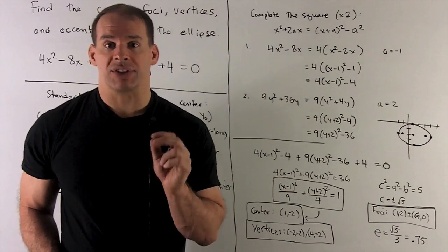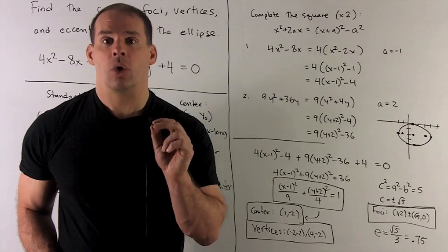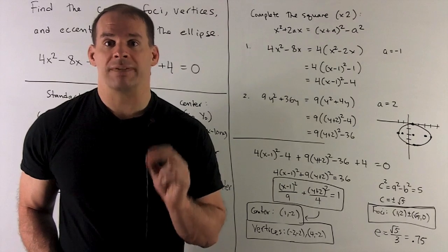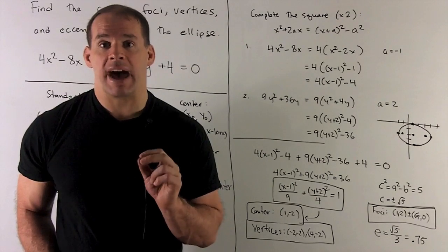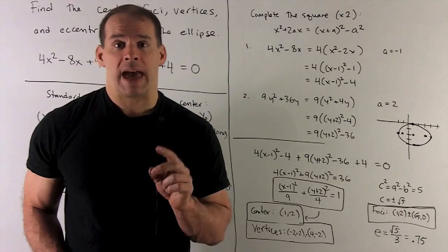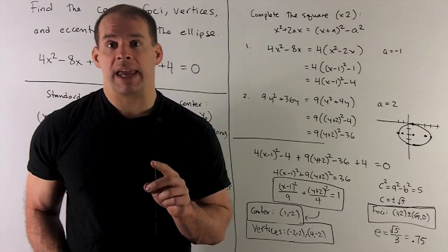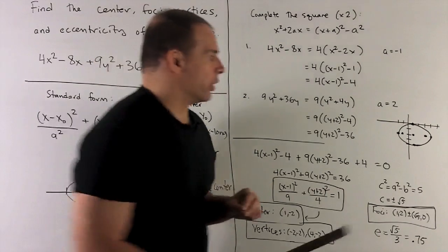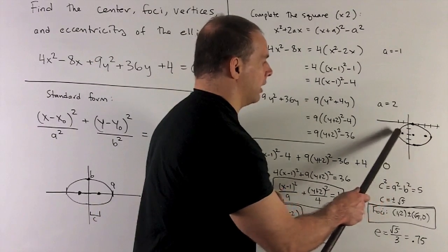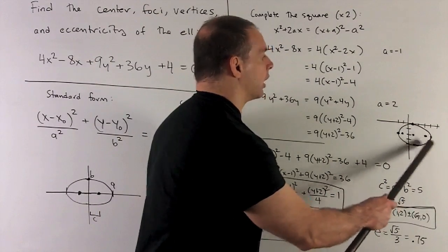Now, for our eccentricity, we just take c over a. So, √5 over 3. Put that in a calculator, you get 0.75. That's closer to 1 than 0. So, that means our ellipse is going to be elongated and our foci are going to be far from the center. If you notice, our foci are kind of close to our vertices here.